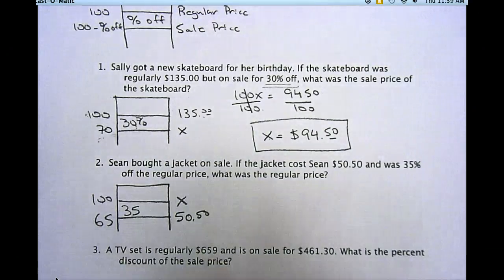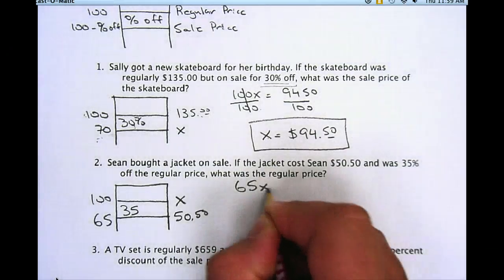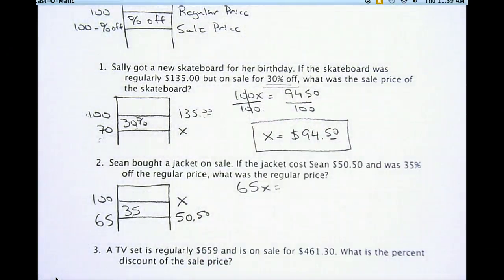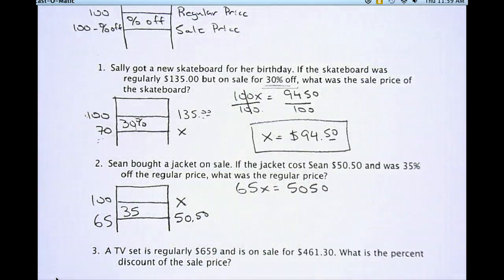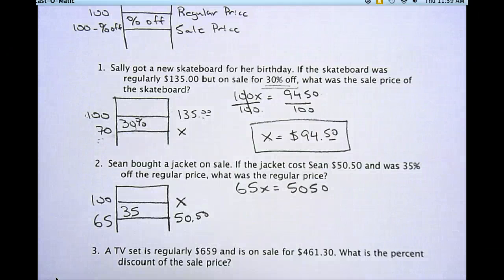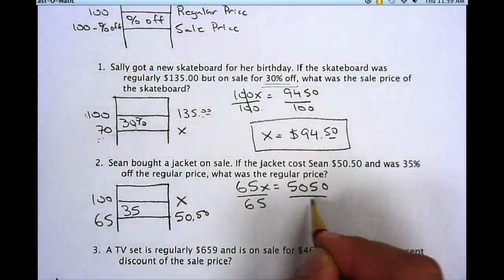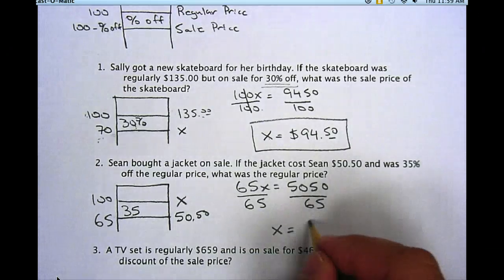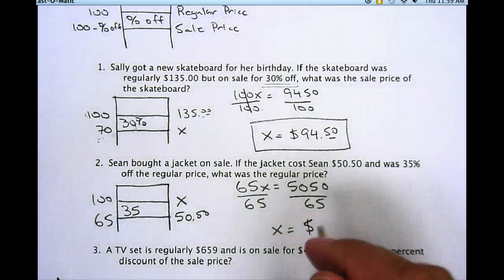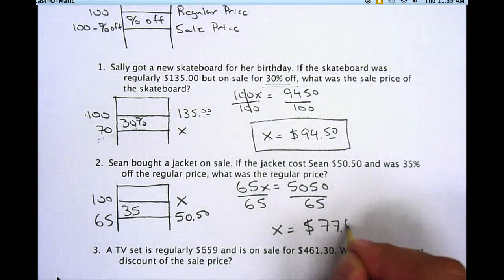100 minus 35 is 65, and I have X up there for the regular price. Now I cross multiply: 65 and X are cross products, giving 65X. And 100 times 50.50 is 5,050. So 65X equals 5,050. To find X, I divide both sides by 65. Taking 5,050 divided by 65, I get $77.69. So the price of the jacket before it was on sale was $77.69.